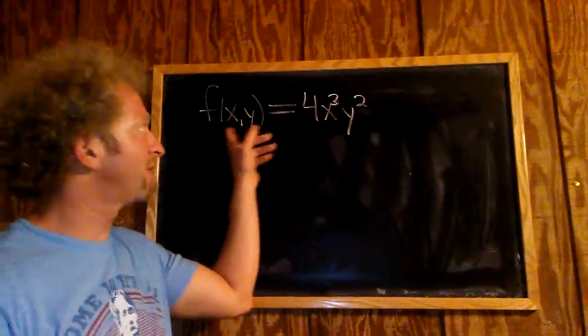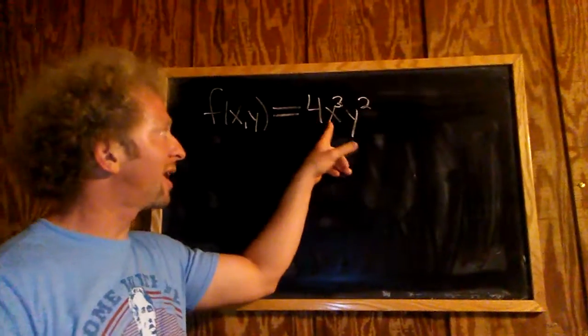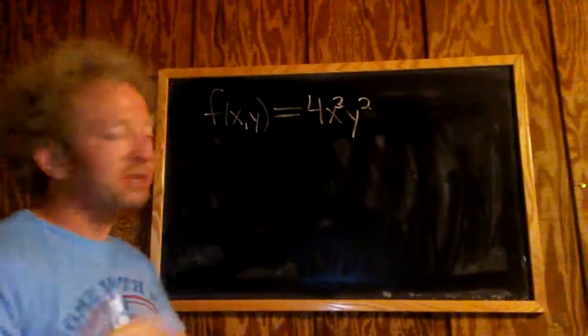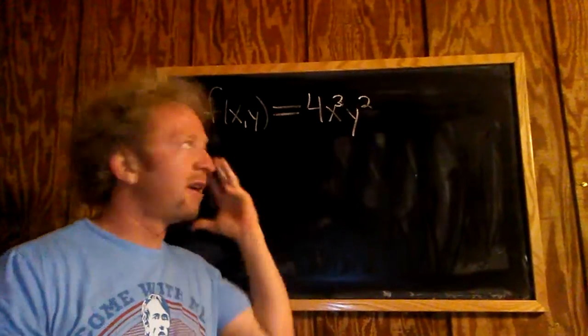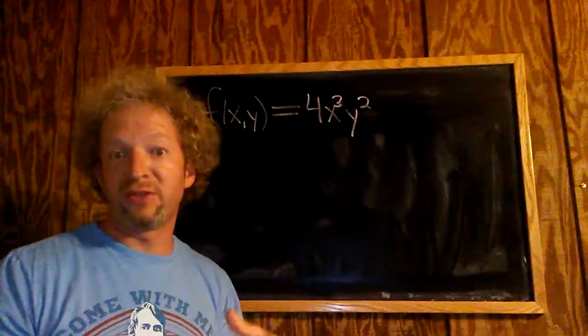We have this function, it's a function of two variables, f(x,y) equals 4x cubed y squared. I'm going to show you how to find the partial derivative of this function. The partial derivative, there's more than one.